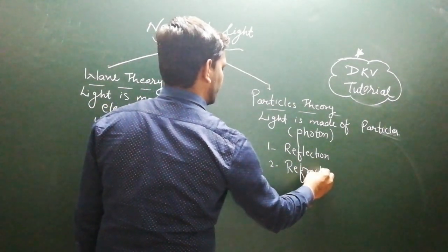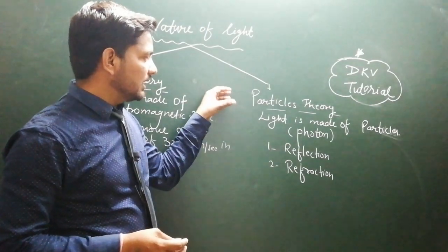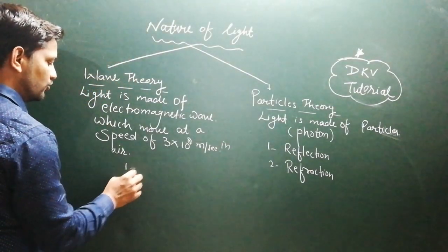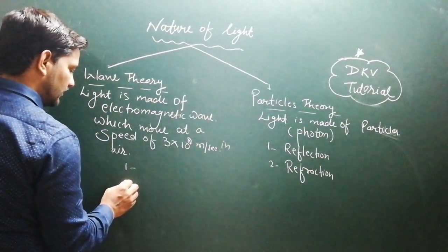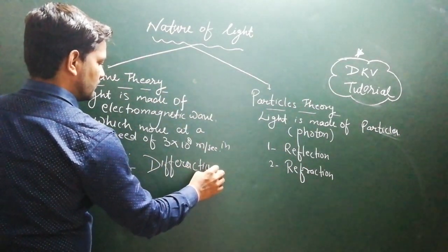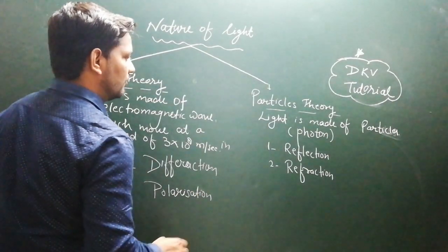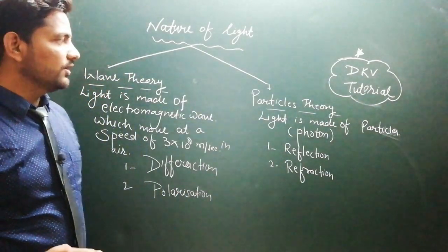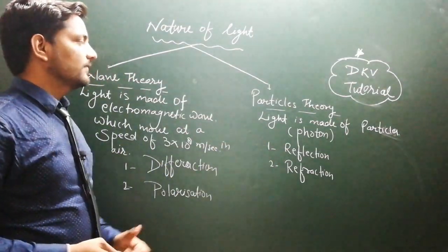Reflection and refraction are phenomena explained when we assume light is made of particles. On the other hand, some phenomena — like diffraction and polarization — are explained when we assume light is made of waves. In the 10th standard we are going to study reflection and refraction. The other phenomena you will study in higher classes. In the next video I am going to talk about reflection of light. Enjoy the video — bye bye!